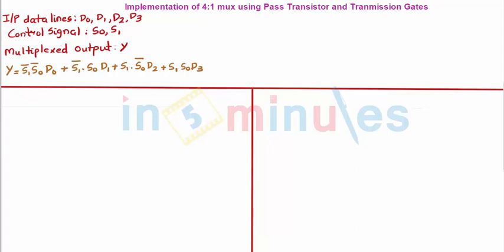Here we have input data lines as D0, D1, D2, and D3. My control signals are S0 and S1, and my multiplexer output is equal to Y.